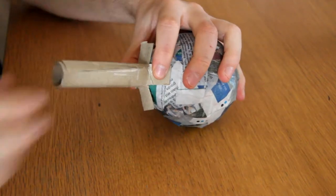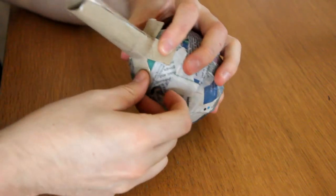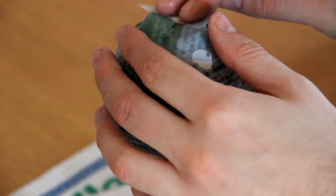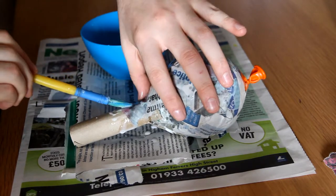And then you'll paper mache the whole thing again just to cover up that hole, to cover up the tape, and just to eventually make it stronger. But once that's all paper mached again, simply let it dry.